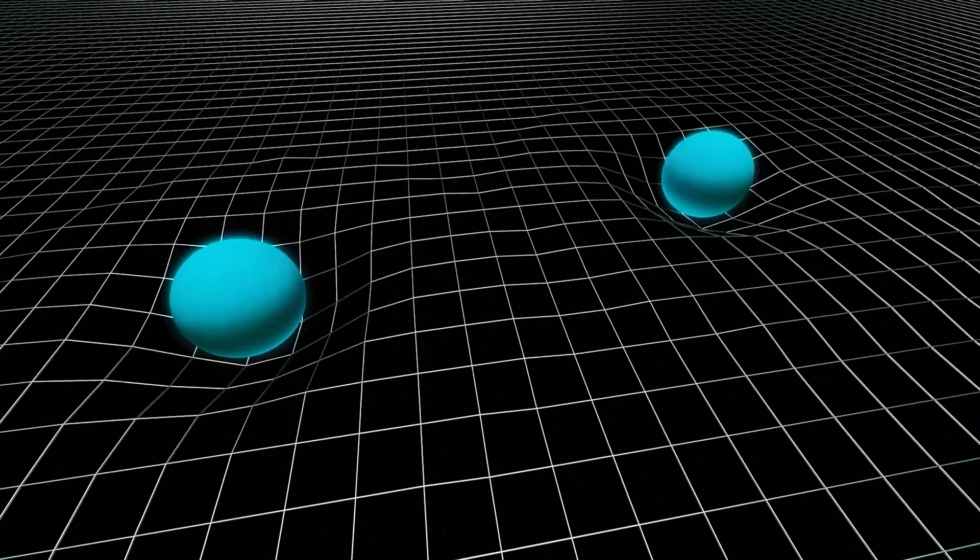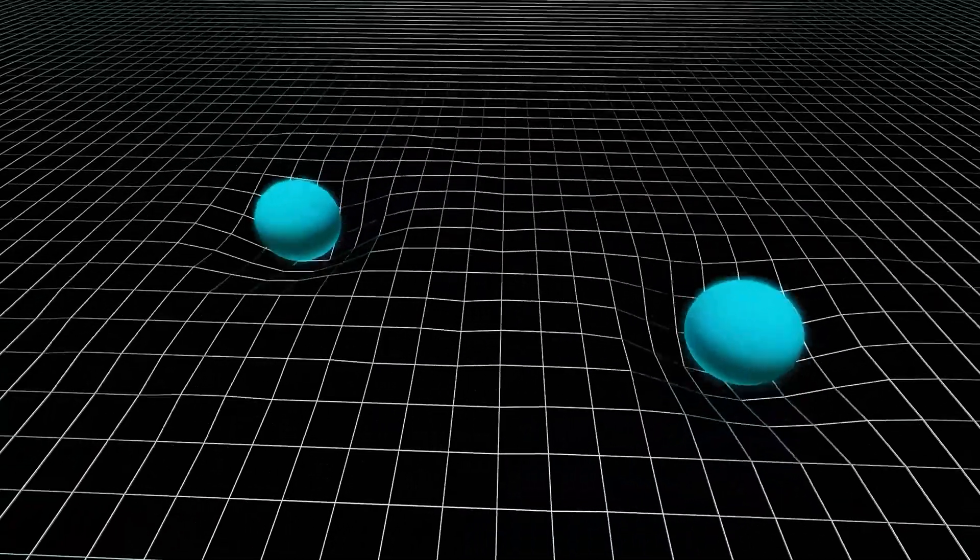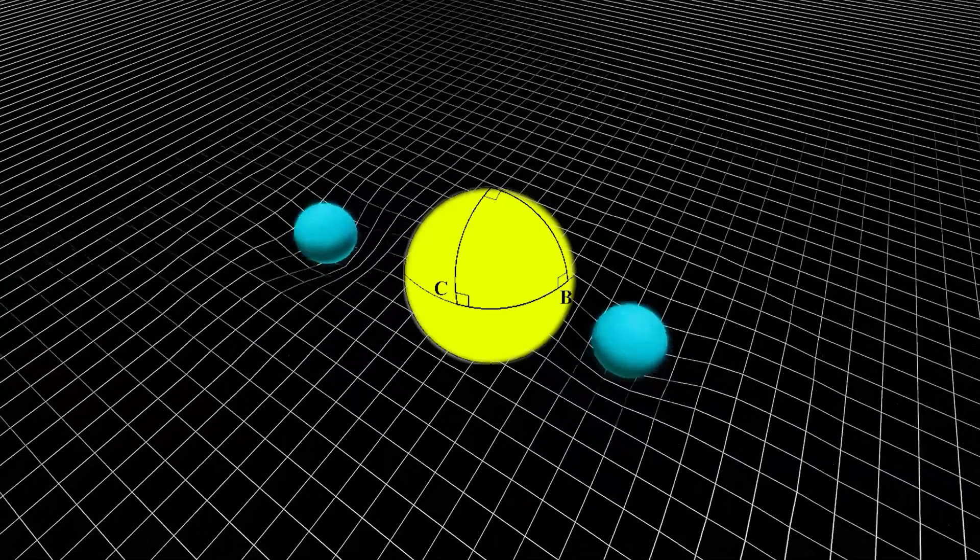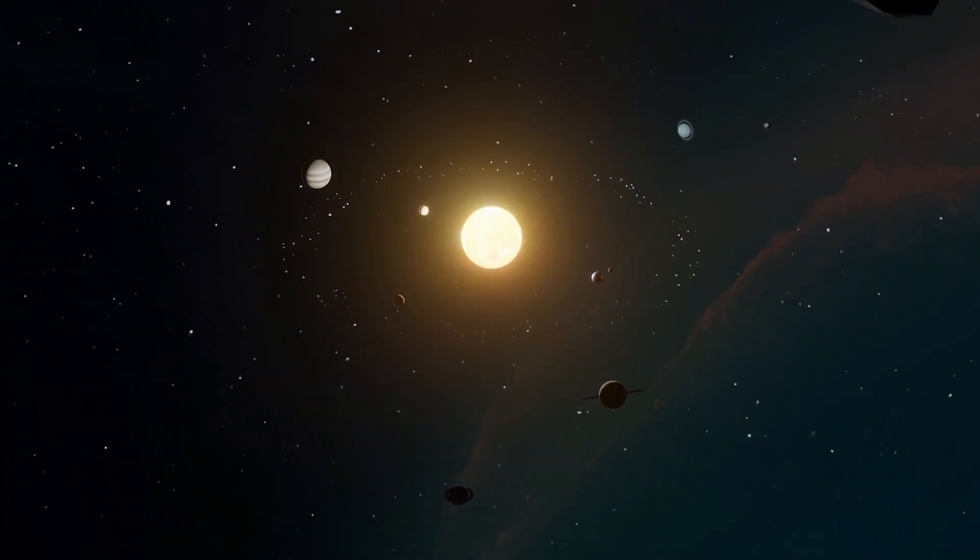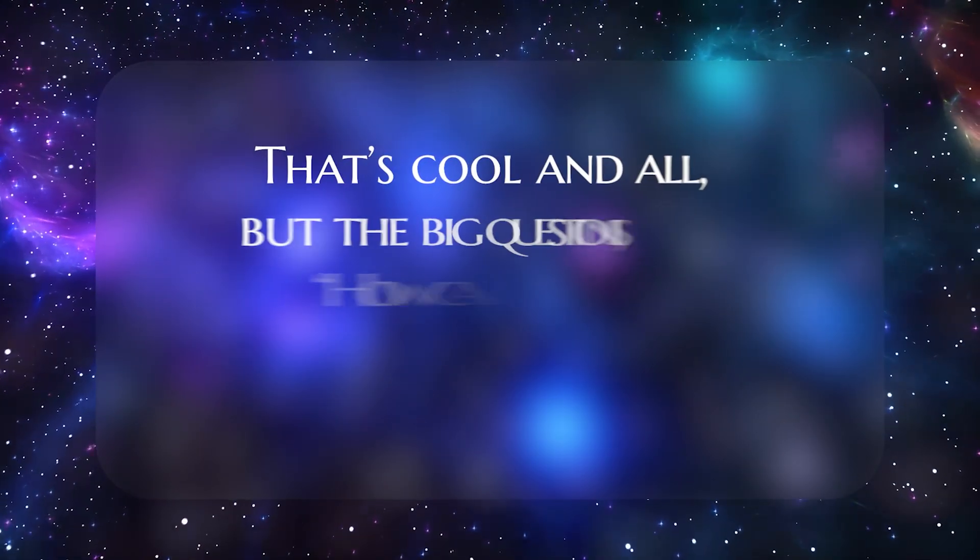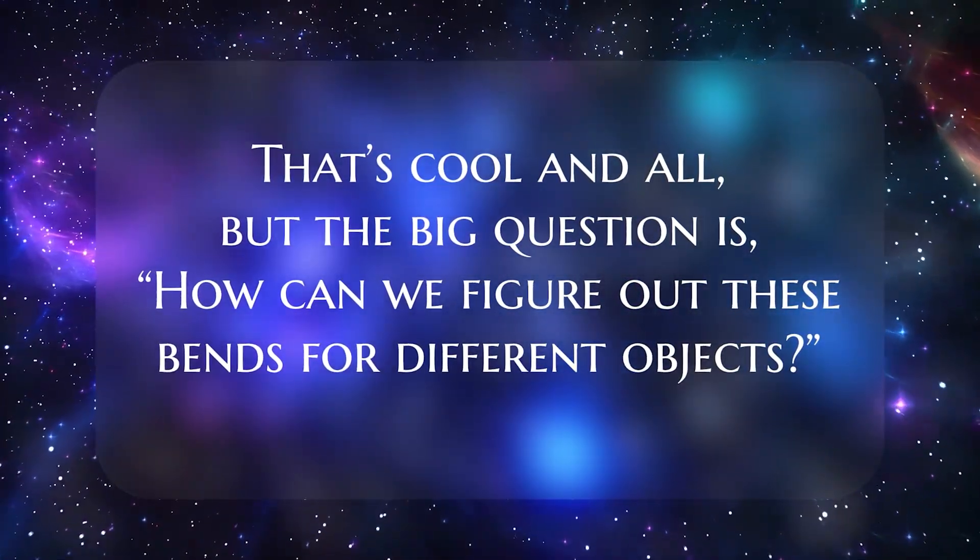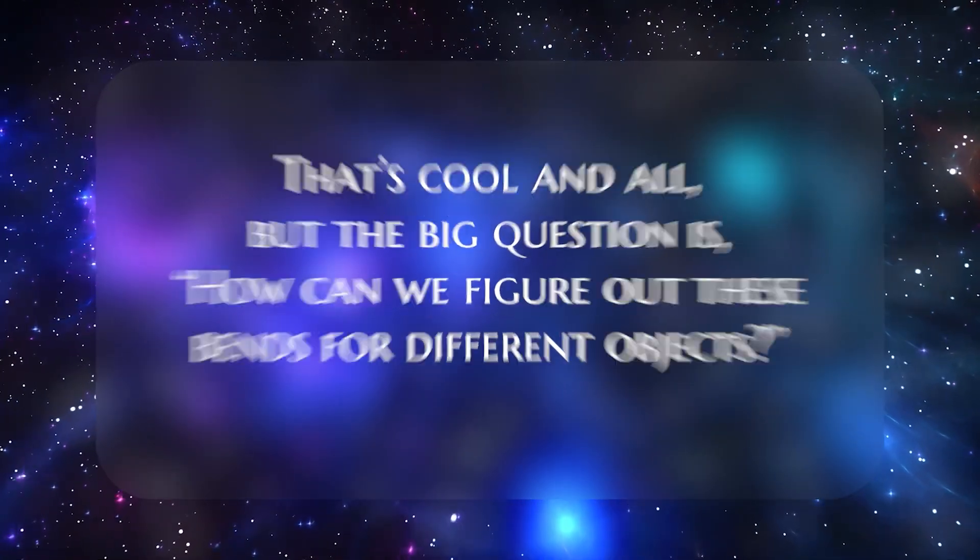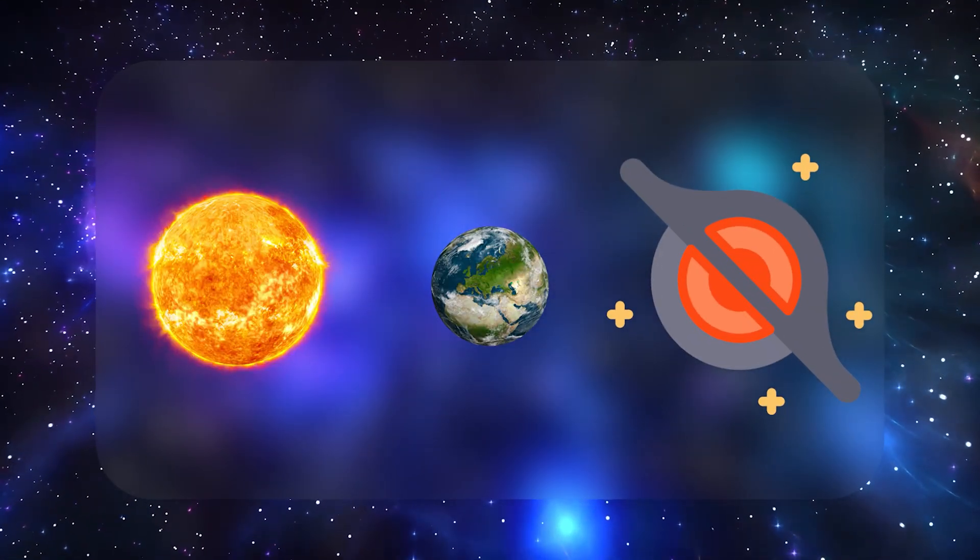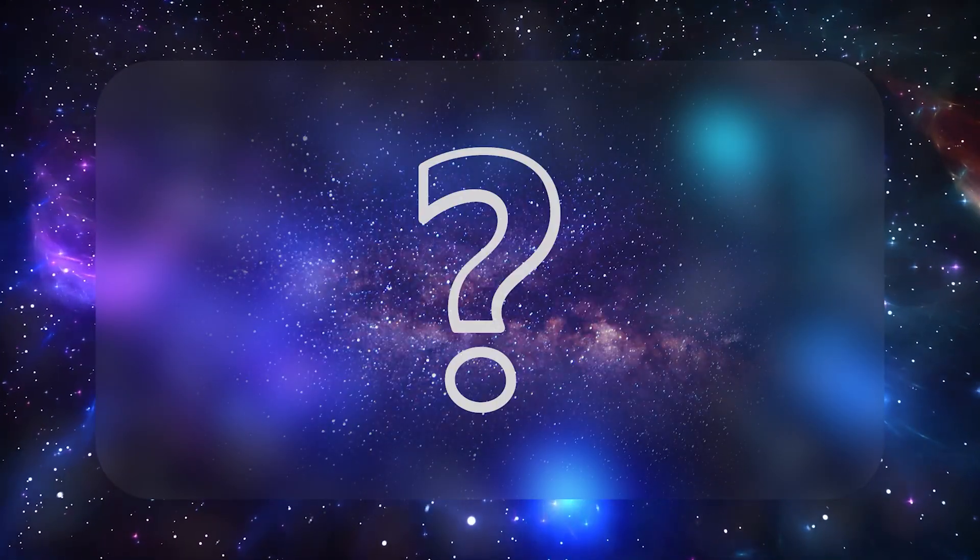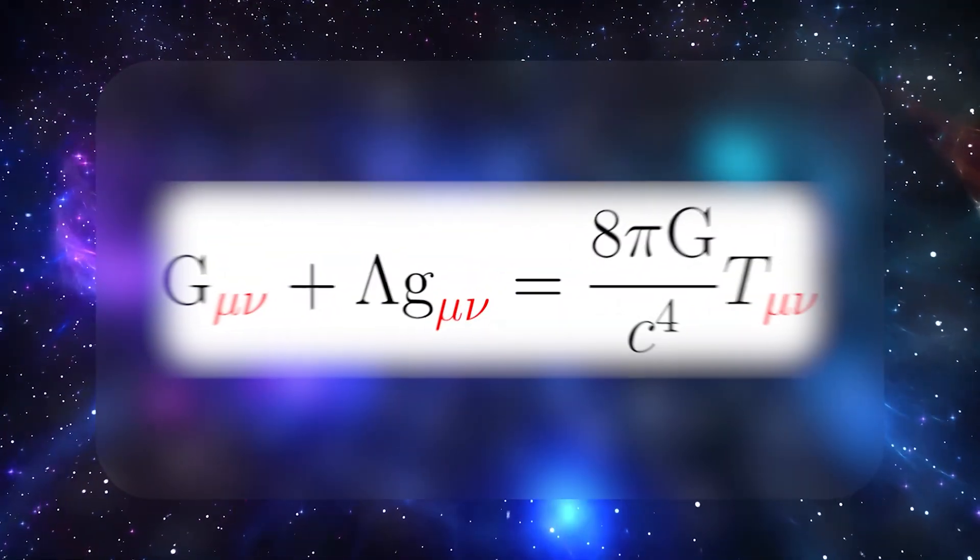In previous discussions, we've encountered the notion that mass and energy bend spacetime, that objects follow curved geodesics, and that orbits aren't commanded by a mystic gravitational pull but are simply straight paths in a warped reality. All that's spectacular, but it begs an even bigger question: how do we figure out how space and time bend around a given cluster of mass? More bluntly, if we toss the sun, earth, or a black hole into the cosmic mix, who decides how the geometry changes? That's exactly where Einstein's field equations come in.